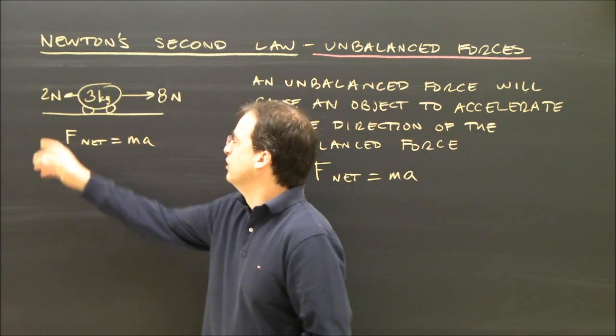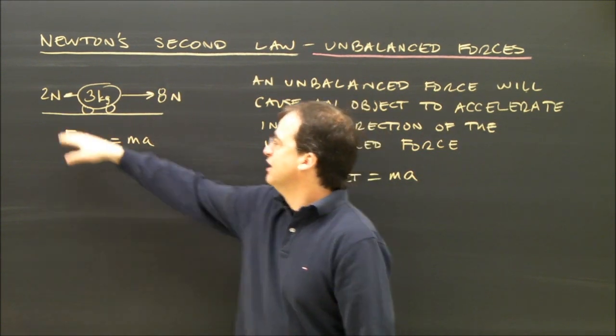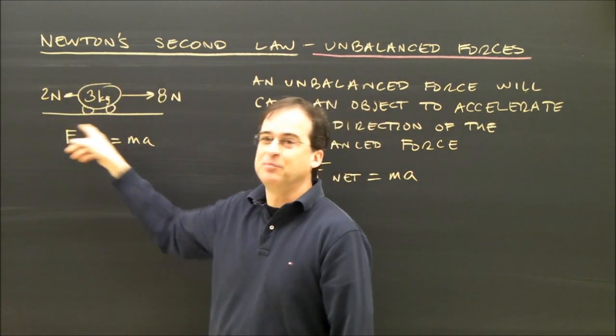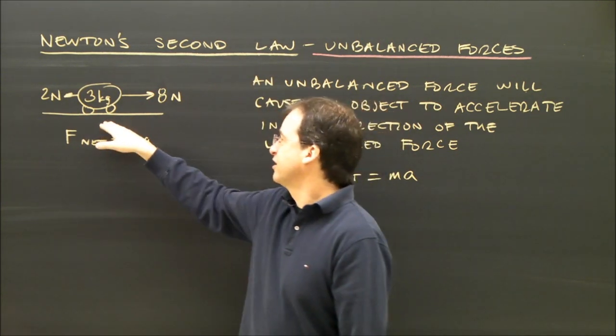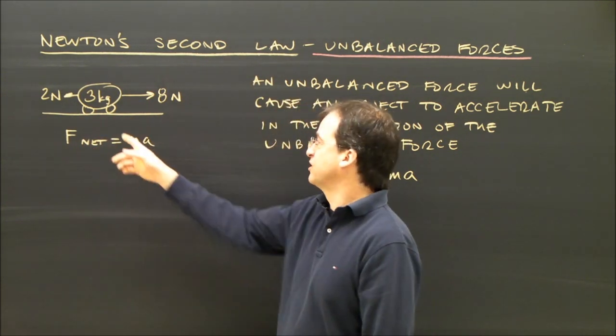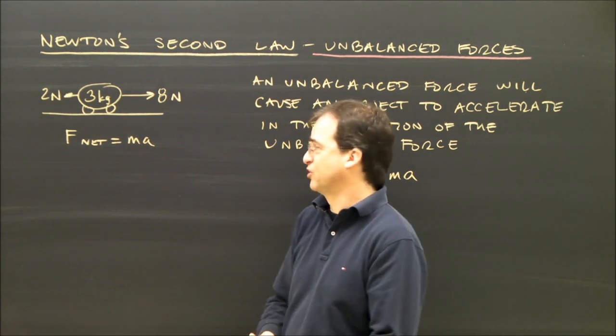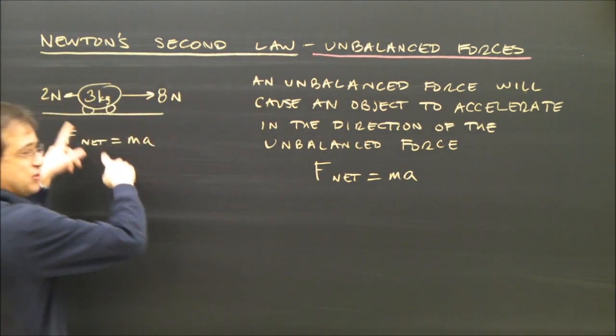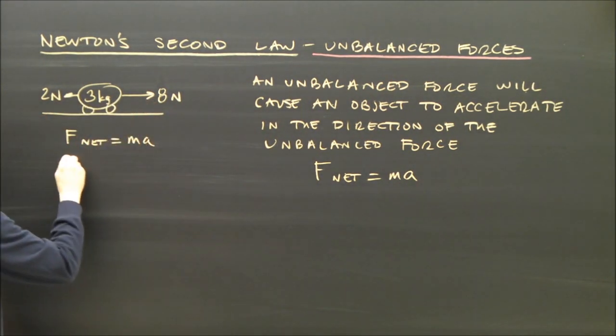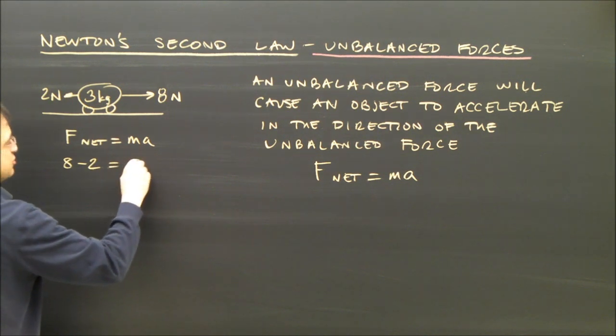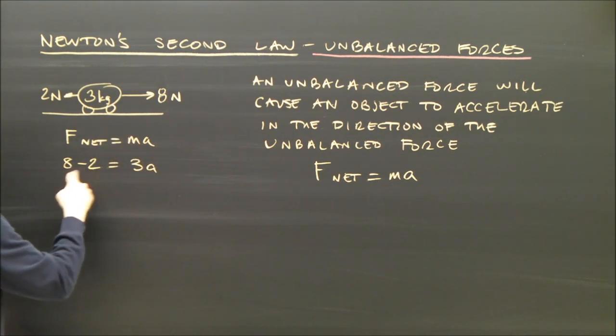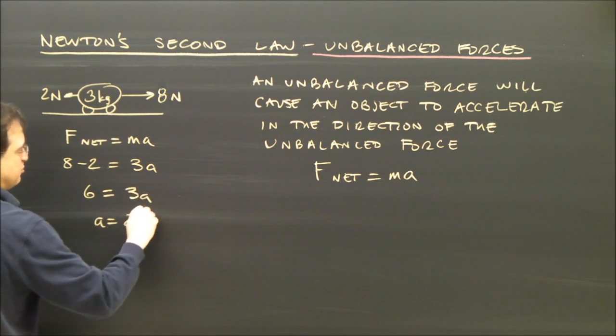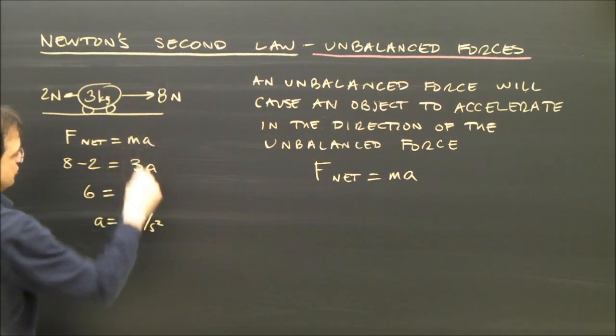If we look over here, we have an example of an object being pulled with eight newtons, and let's say there is two newtons of friction. So there's an unbalanced force on it. Newton's second law applies. This thing is going to accelerate, and it's going to accelerate to the right, because it looks like there's more force to the right. So there's Newton's second law, F net equals MA. Well, what are the forces? What's the net force? I add them up. Eight to the right, two to the left, equals mass times acceleration. So you get eight minus two is six equals three A. A equals two meters per second squared to the right.